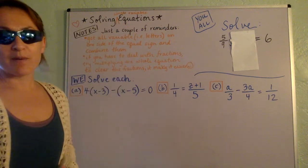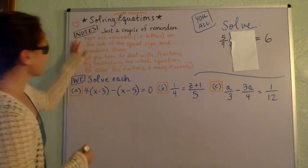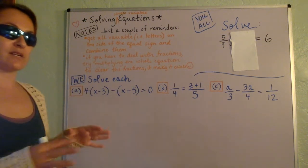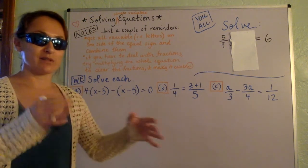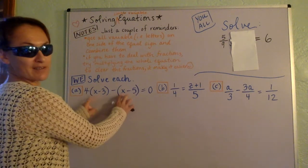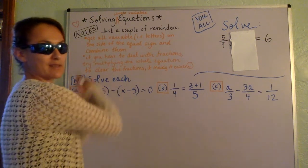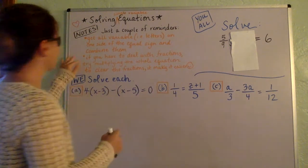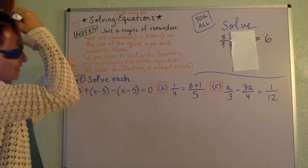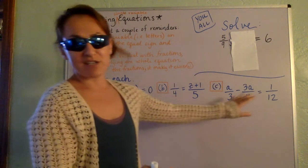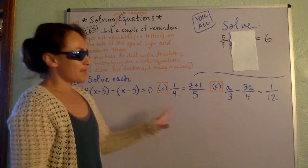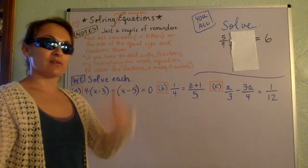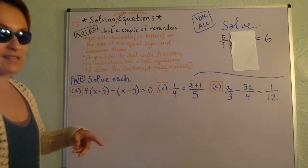Just brushing up on solving equations. So just a couple of reminders. You just want to kind of remember whenever you solve equations that you want to get all the variables, that's all the letters, all the letters together on one side of the equal sign and then everything that doesn't have a letter on the other side. And the sides don't really matter. And then if you're dealing with fractions and you don't like fractions, you want to maybe consider multiplying the whole equation by something so that it'll clear all the fractions. But we'll get to that in just a second.